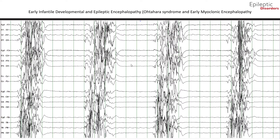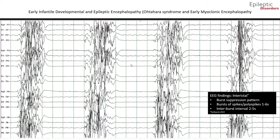In this bipolar montage EEG, we will show a typical patient with early infantile developmental and epileptic encephalopathy, Otahara syndrome, and early myoclonic epilepsy. The background is abnormal and shows typical burst suppression pattern, which consists of high-voltage asynchronous delta-theta waves mixed with spikes and polyspikes, ranging from 150 to 300 microvolts, lasting from 1 to 6 seconds, and alternating with interburst intervals of low-voltage activity less than 5 microvolts or complete suppression lasting 2 to 5 seconds. The burst suppression seen in EIDEE is usually seen in both awake and asleep states and is unresponsive to stimulation. The burst suppression pattern may disappear with age, but the EEG will remain abnormal.